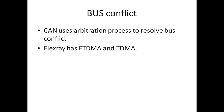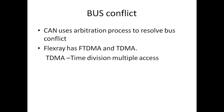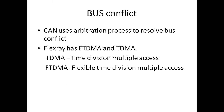For bus contention, CAN uses an arbitration process to resolve bus conflicts. Whereas FlexRay has two different segments — a static segment and a dynamic segment. In the static segment, it makes use of Time Division Multiple Access (TDMA), where a slot is allocated for every node to transmit. There is also a dynamic segment where nodes compete for the bus dynamically — this is called Flexible Time Division Multiple Access (FTDMA).